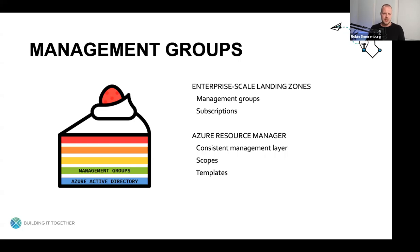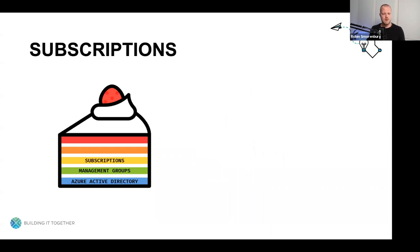So what we looked at in our management group layer is the enterprise-scale landing zones, where we looked at management groups and subscriptions, and we looked at Azure Resource Manager — the layer, the scopes, and the templates. Next up: subscriptions. Subscriptions in their simplest form are containers for your resource groups and resources. When you deploy and use resources, the costs are billed to your subscription, which is your agreement with Microsoft to use their platform and services. Subscriptions are mandatory — without them, deploying resources is not possible.